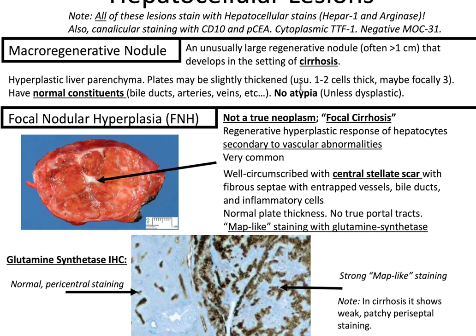Macro-regenerative nodule. This is an unusually large regenerative nodule, often greater than a centimeter, that develops in the setting of cirrhosis. This is hyperplastic liver parenchyma; plates may be slightly thickened, usually 1-2 cells thick and maybe focally 3. It has normal constituents including bile ducts, arteries, veins, etc. There is no atypia unless dysplastic.